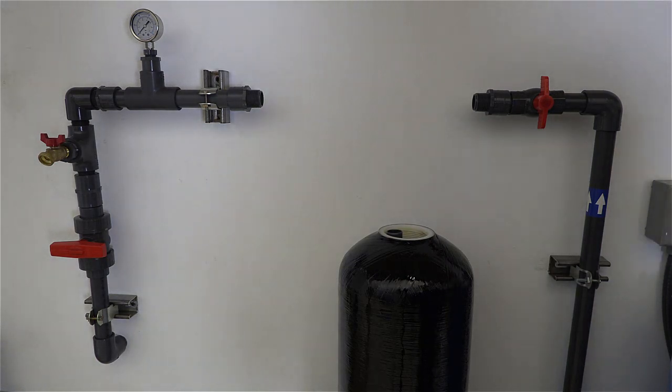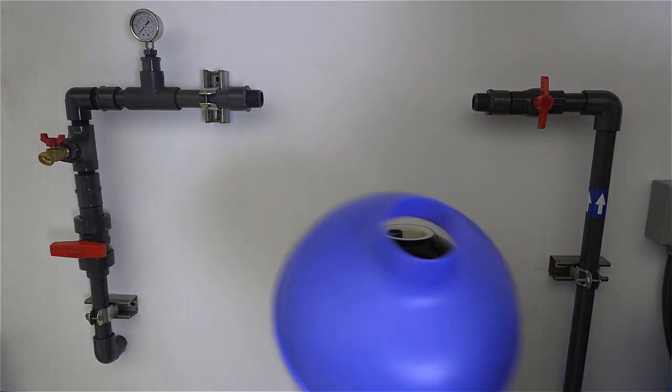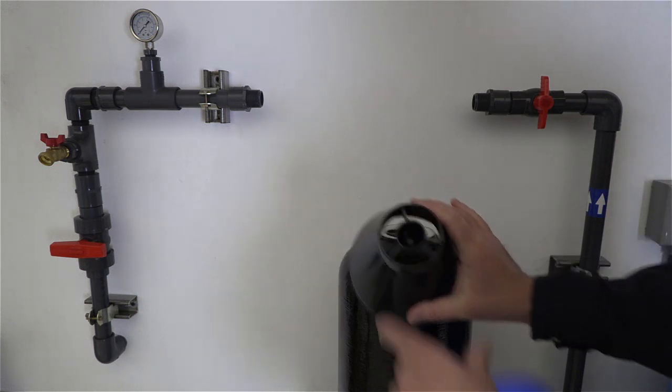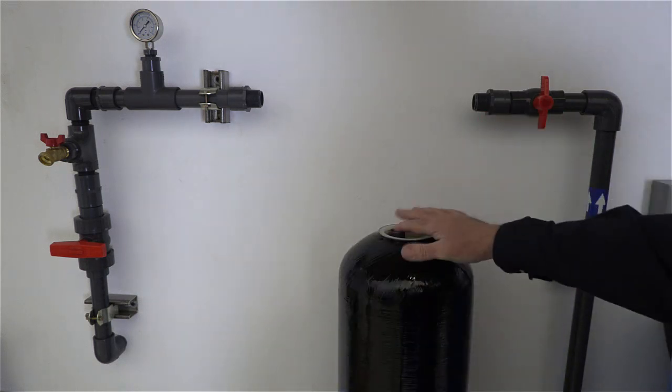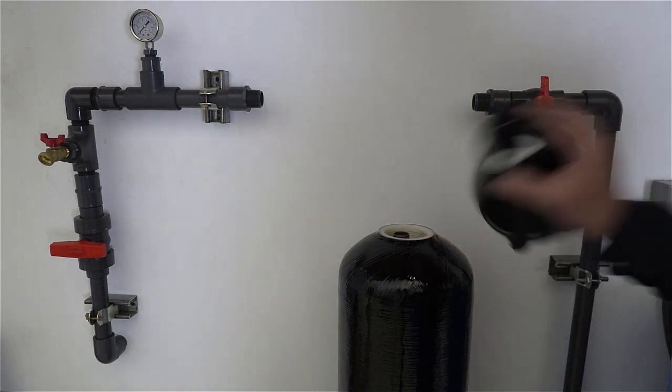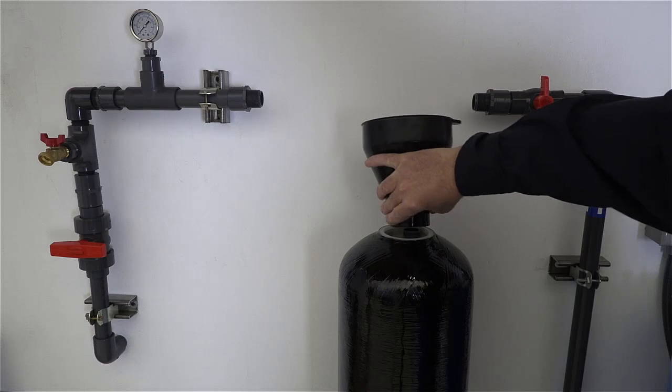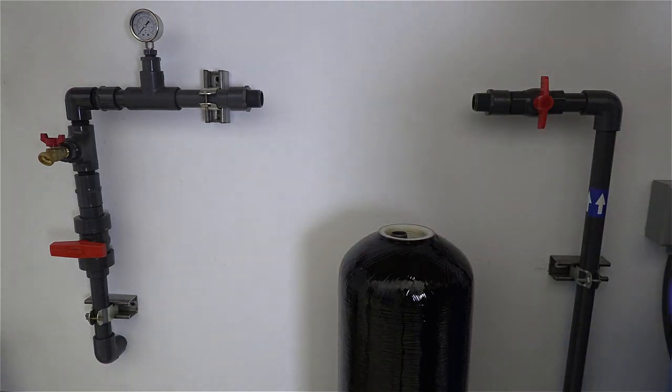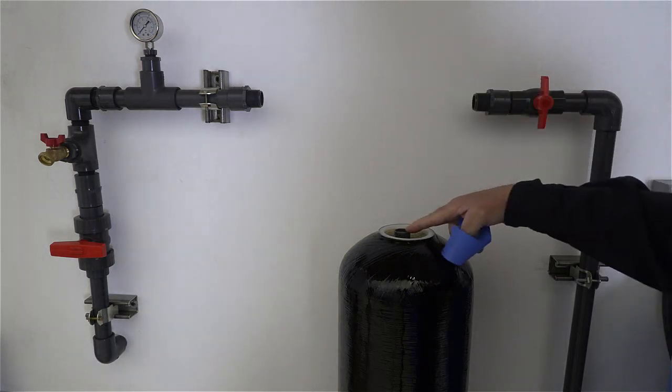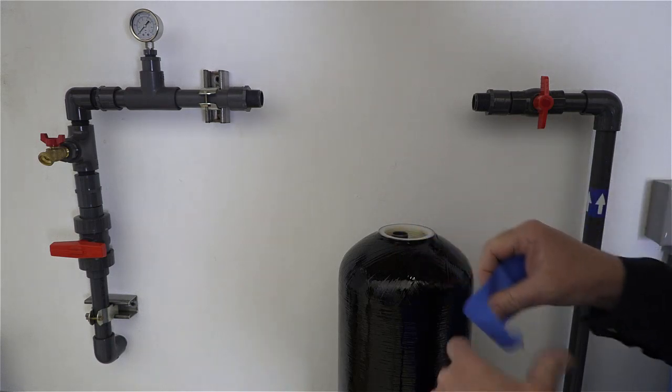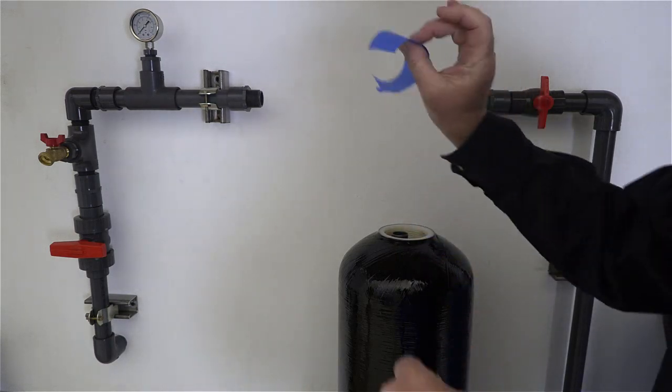Now we'll install the funnel to put the media in. There are two types: a blue funnel and a black funnel. The black funnel has a cap that covers the D tube so you don't get media down inside. If you have the blue funnel, you need to put tape over the D tube before installing media, and make sure you put a buddy tab on that tape.